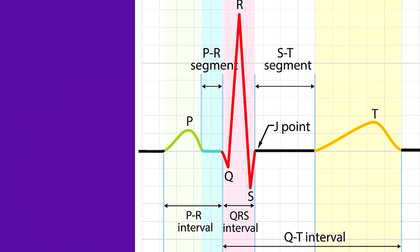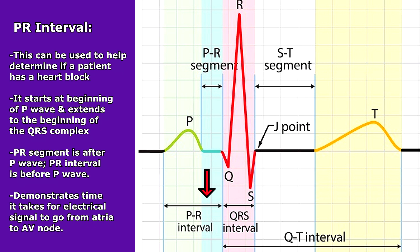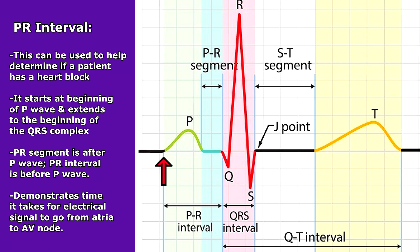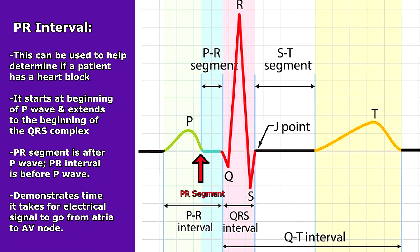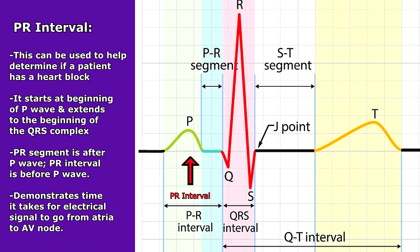Also found in this area is the PR interval, and it's very important to remember the PR interval because we measure it to determine if your patient has a heart block. The PR interval starts at the beginning of the P wave and extends to the beginning of the QRS complex. So it's different than the PR segment, which was after the P wave.